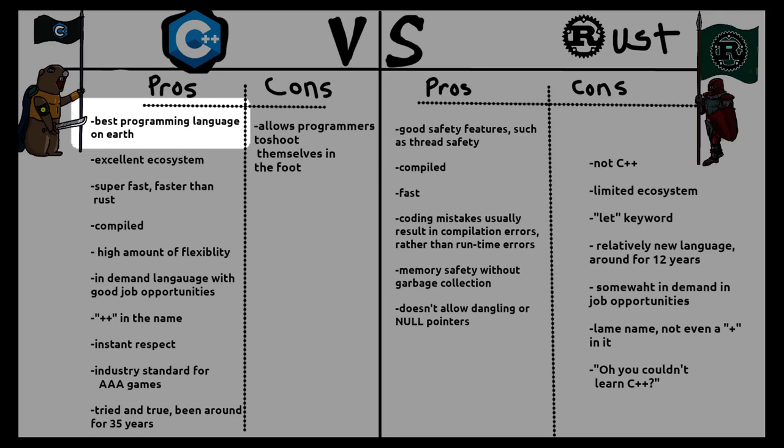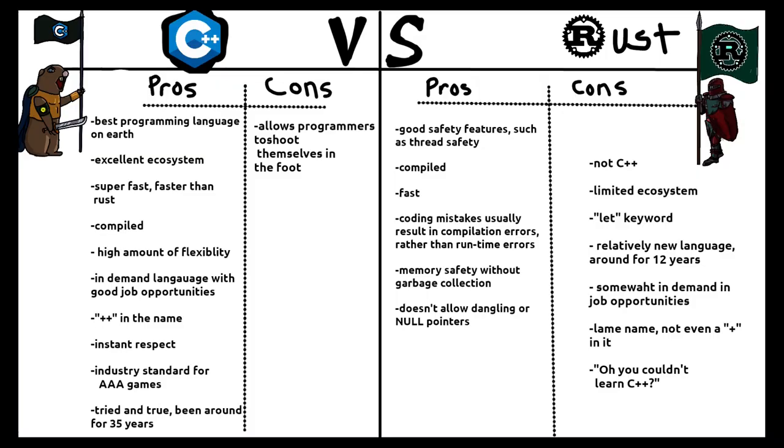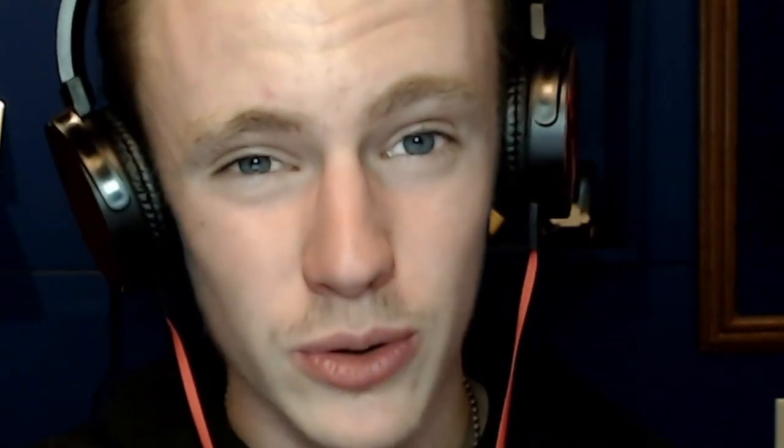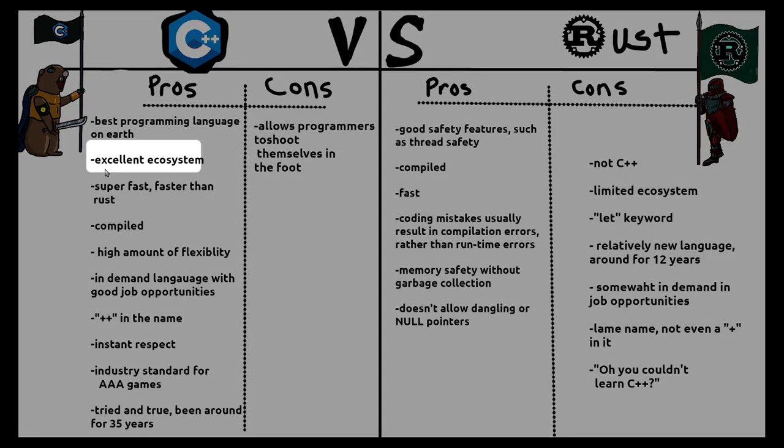Let's kick this off with the first pro for C++, and that's that it's the best programming language on earth. It's a fact, there's no edging your way around it. It's the best because it's C++, therefore it's the best. It's kind of circular logic, but oh well. Rust, on the other hand — well, it's not C++, and that in itself makes me really wonder: is Rust even a programming language?